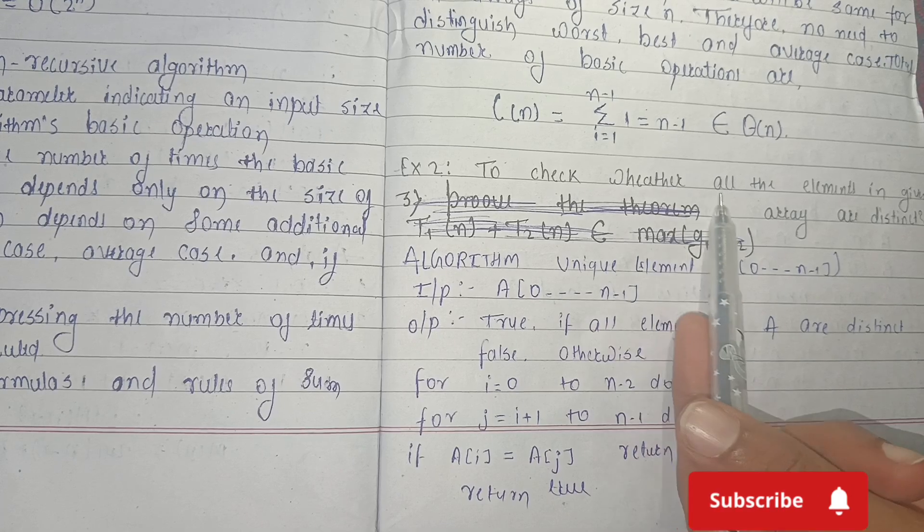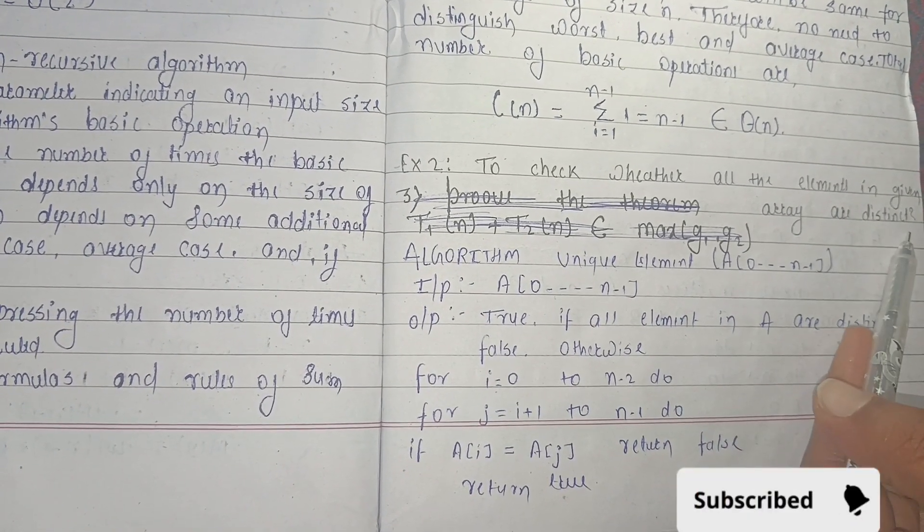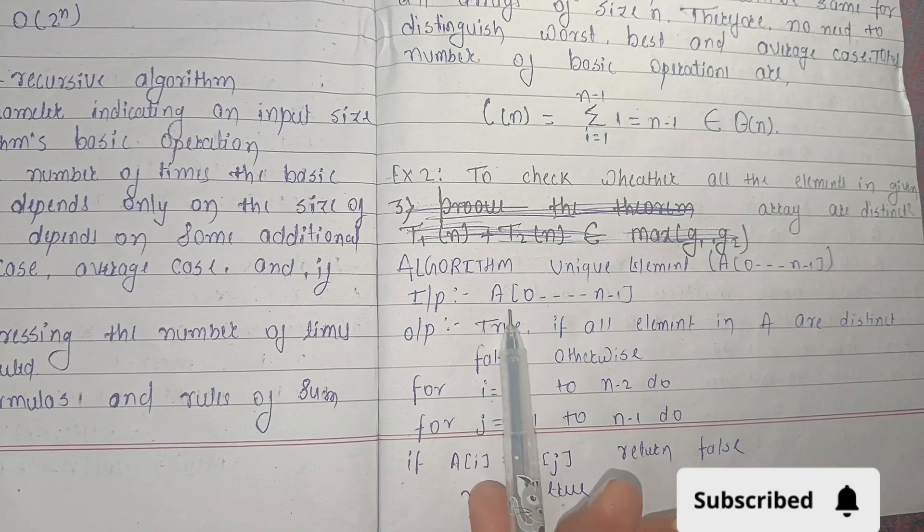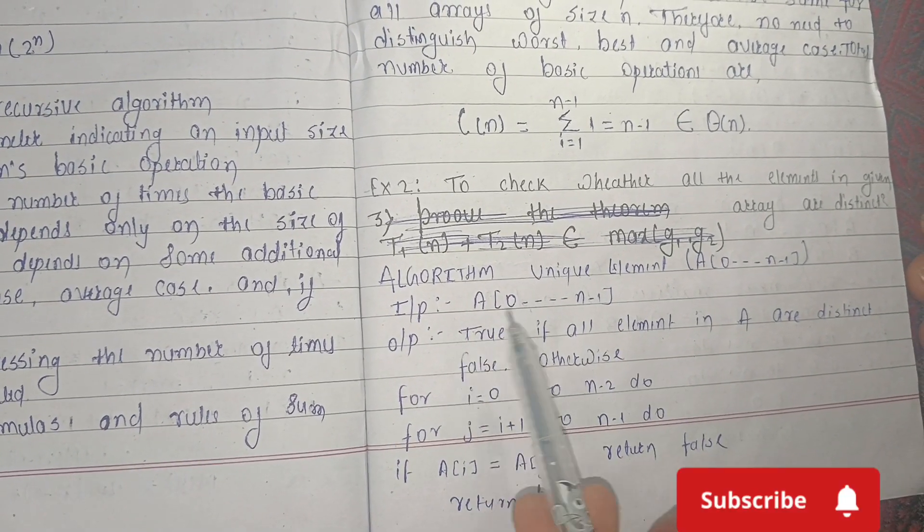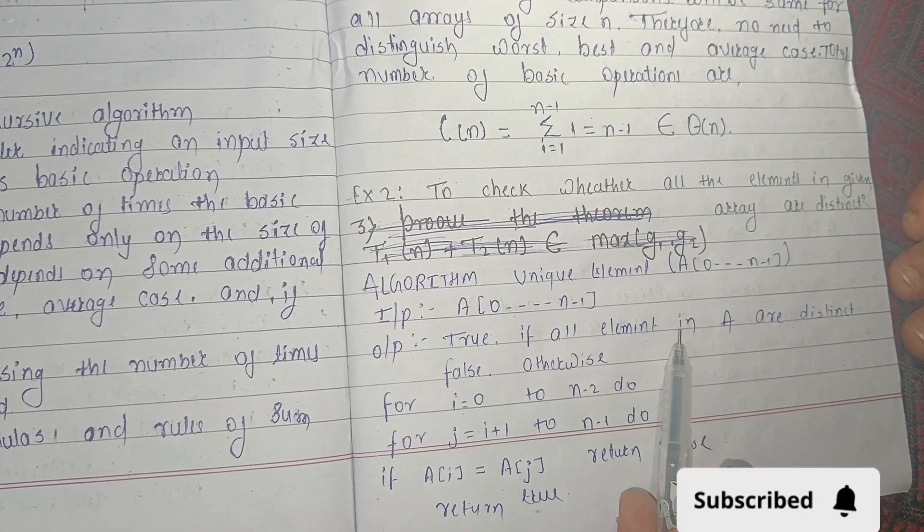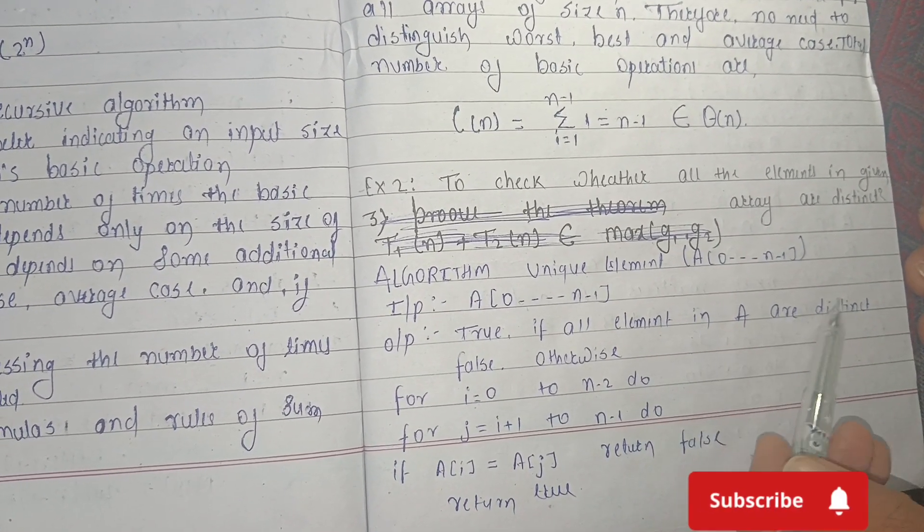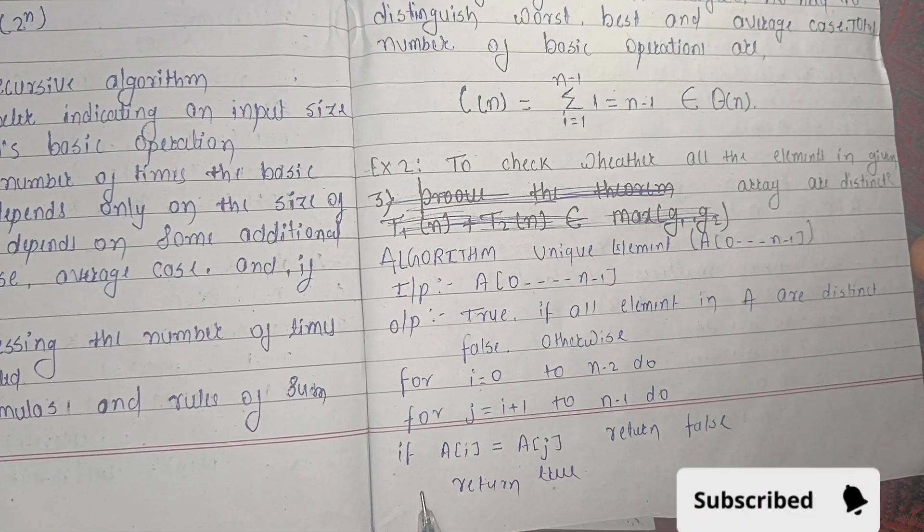Another example: check whether all elements in a given array are distinct. Algorithm: Input is A[0 to n-1]. Output is true if all elements in A are distinct, false otherwise. Here we are using for loops.